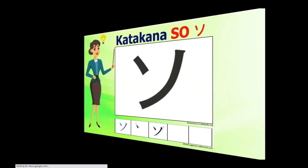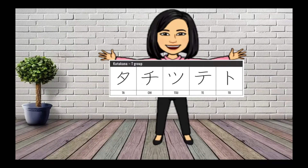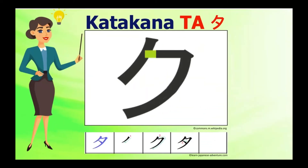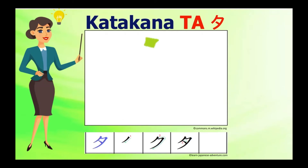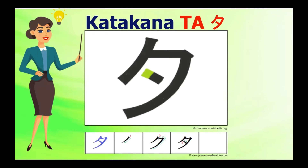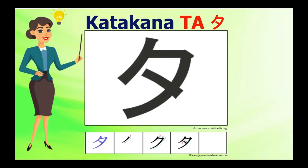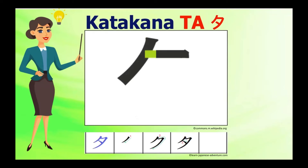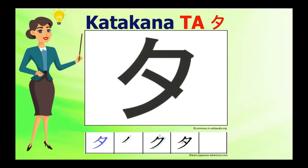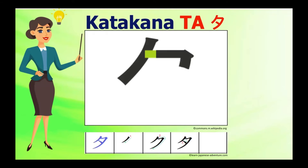Next is the katakana T group: ta-chi-tsu-te-to. Katakana Ta — look at your katakana chart; Ta and Ku are almost similar, except that Ta has a third stroke, which is a small line written slightly slanted on the second stroke order.